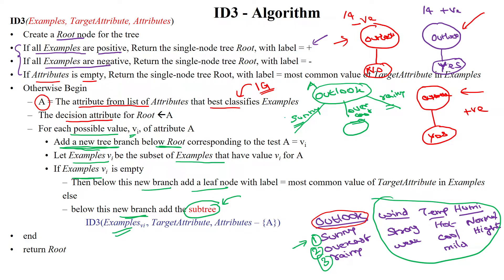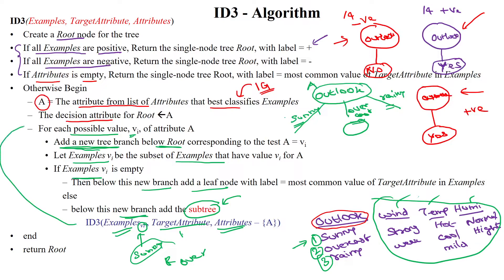For the examples of a particular value like sunny, we select from the remaining attributes — wind, temperature, or humidity — whichever is best. We repeat this for rainy and overcast as well, recursively going back to select the best attribute each time. Finally, we return the root. This is the way to construct a decision tree using the ID3 algorithm. We will see a worked example in the next video. Thanks for watching.